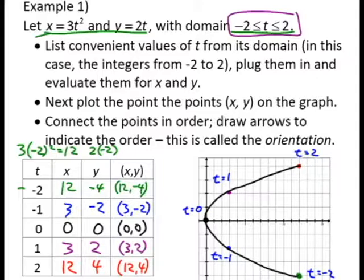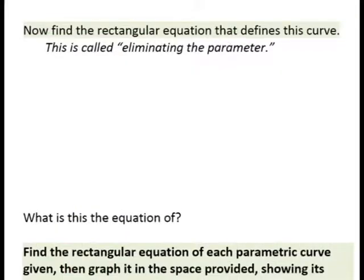This looks very much like a sideways parabola with boundaries. We can verify that algebraically by doing something called eliminating the parameter. This is the same example. I've simply copied the parametric equation over. To eliminate the parameter, this means we're eliminating t. What we do algebraically is we solve for t and then substitute into the other equation.